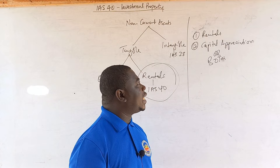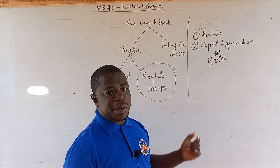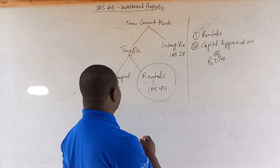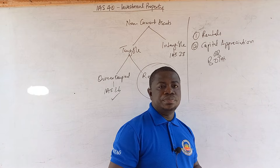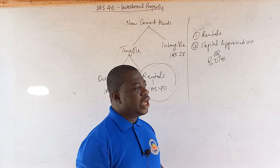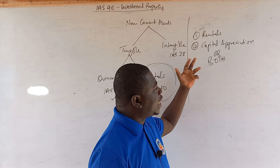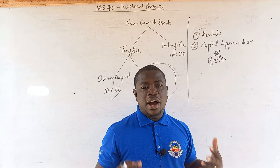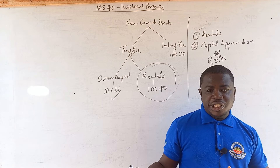It means some things are not part of investment property. We don't use investment property as inventories, and we don't use them as owner-occupier. IAS 16 owner-occupied property is not investment property, and inventories under IAS 2 are also not investment property. Let us now look at exclusions from investment property — things that are not investment property.